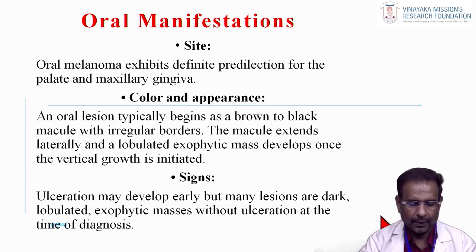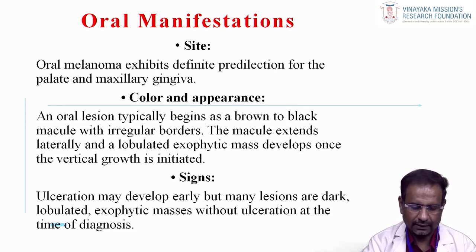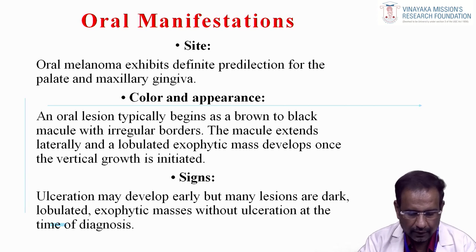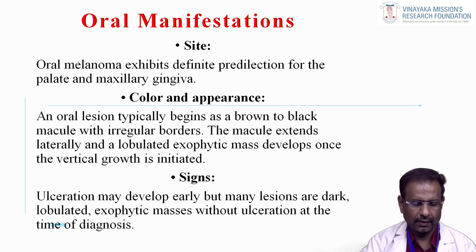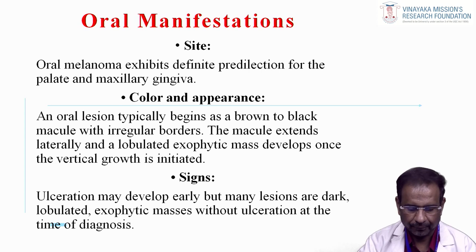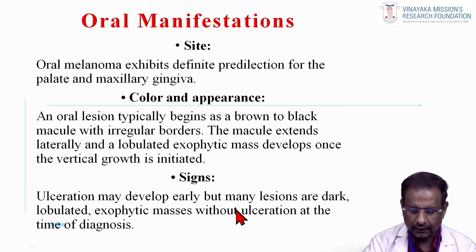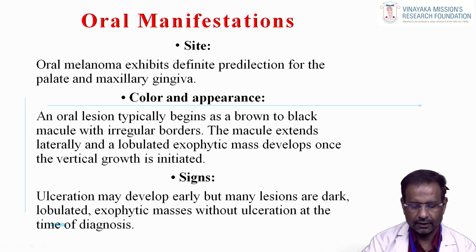Oral manifestations: oral melanoma shows a definite predilection for the palate and maxillary gingiva. The color typically begins as a brown to black macule with irregular borders. The macule extends laterally, and a lobulated exophytic mass develops once vertical growth is initiated. Ulceration may develop early, but many lesions are dark lobulated exophytic masses without ulceration at the time of diagnosis.